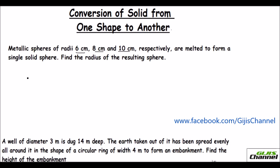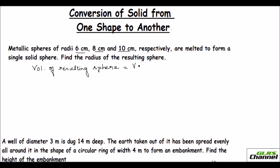The volume of the resulting sphere will be equal to the volume of the three smaller spheres, because those are melted to form the bigger one. Applying the formula: the volume of a sphere is (4/3)πr³. For the resulting sphere I use capital R, so (4/3)πR³ equals the sum of the volumes of the three smaller spheres.